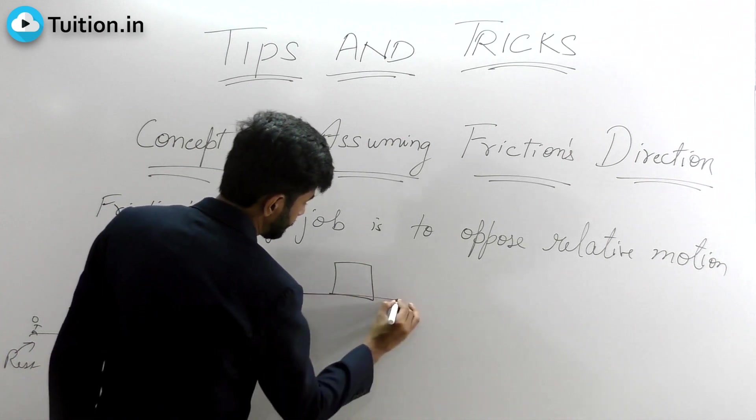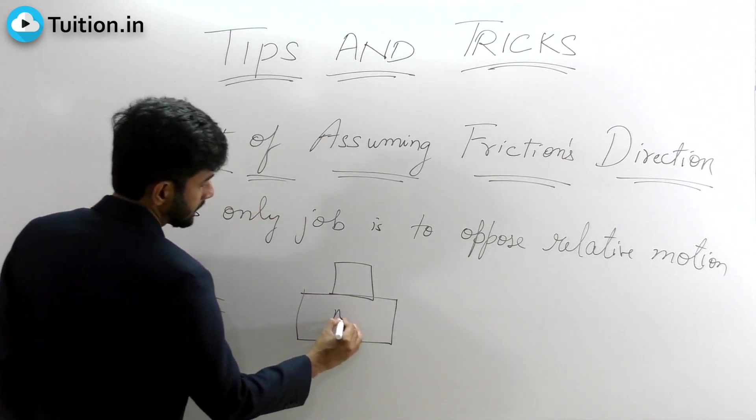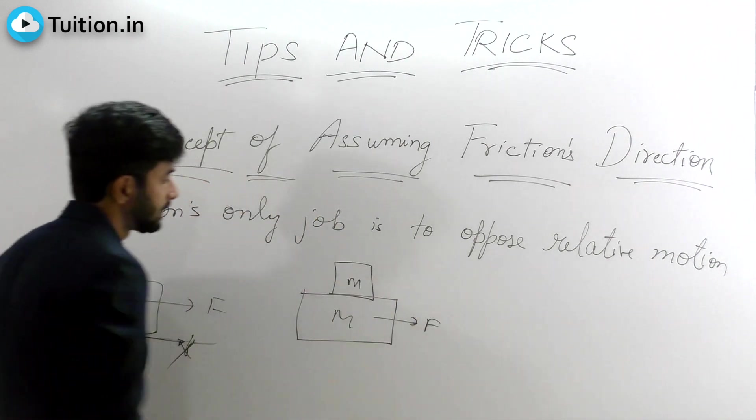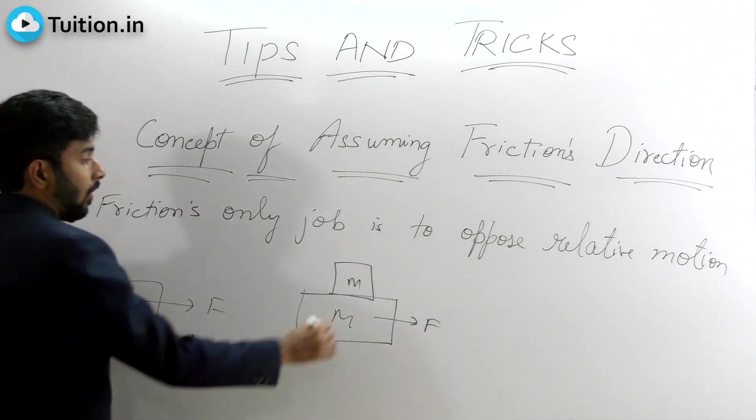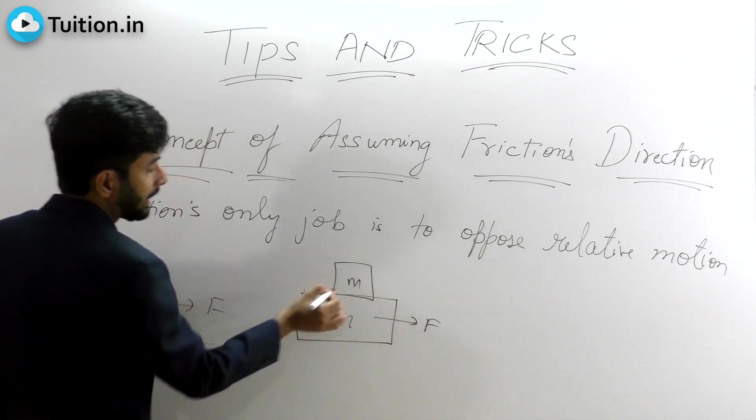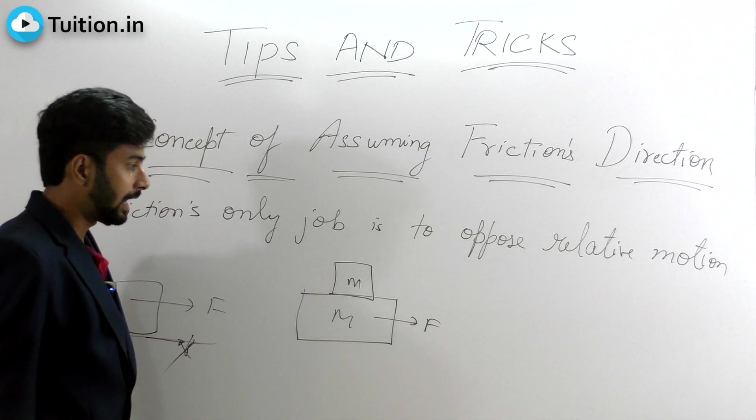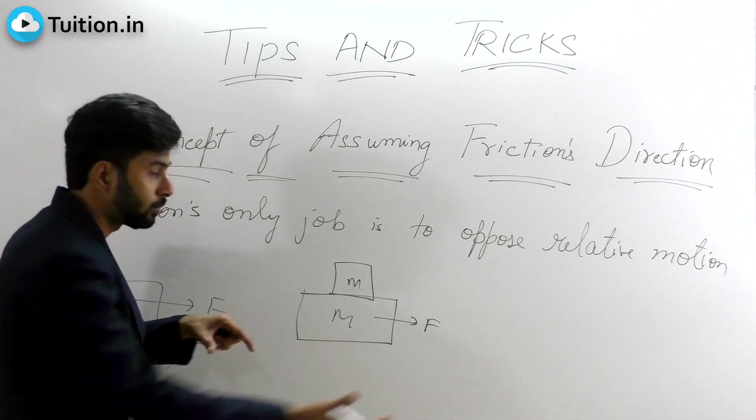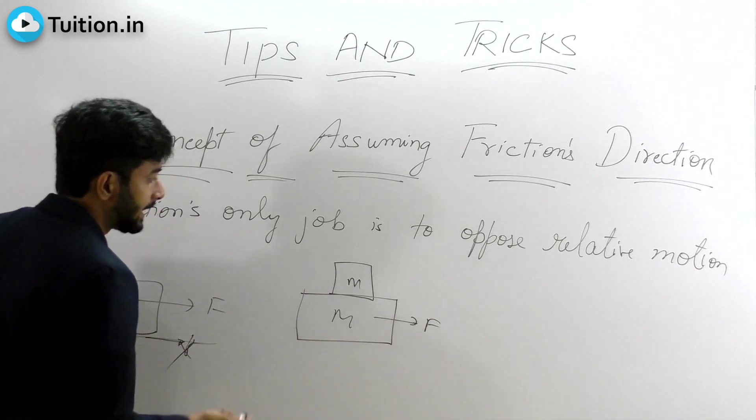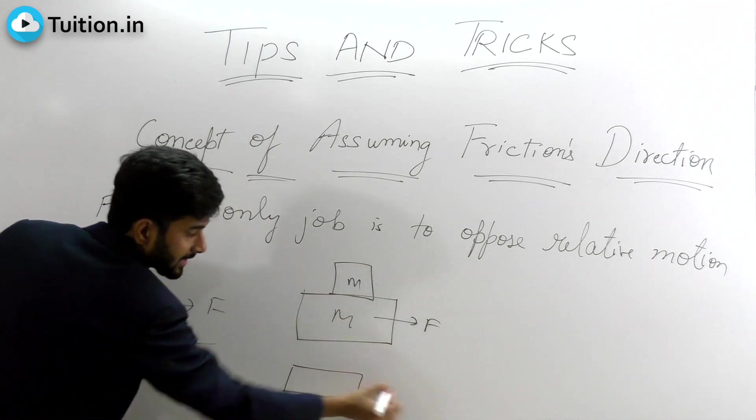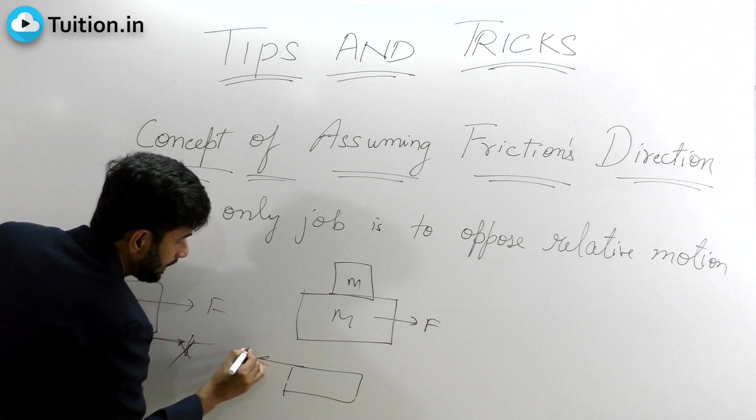Mass m, mass M. If I am applying a force here on this, then how will the relative motion of this capital M be with respect to small m? So if I stand on small m, what I will see is that capital M is trying to move that side. With respect to small m, capital M is trying to move that side. That is why friction on capital M is this side.